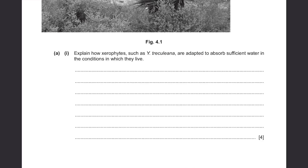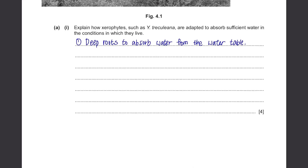First of all, they have very deep roots to absorb water from the water table. The water table is basically a layer of water deep under the ground, so you need deep roots to reach it. Then, the roots are very long and they spread out below the surface to absorb water as much as possible when it rains or just to absorb the water already present underground.